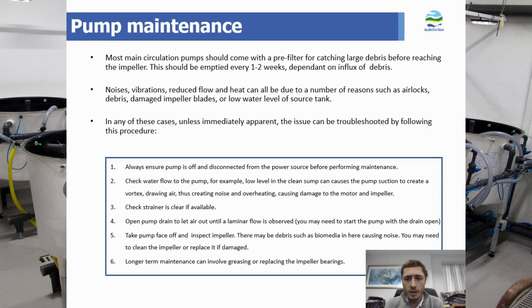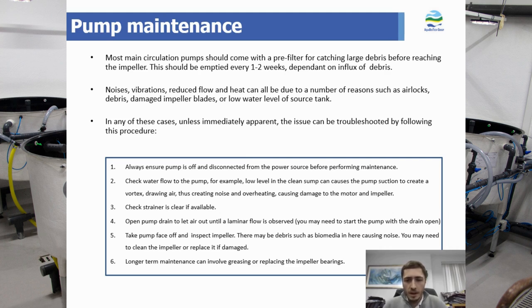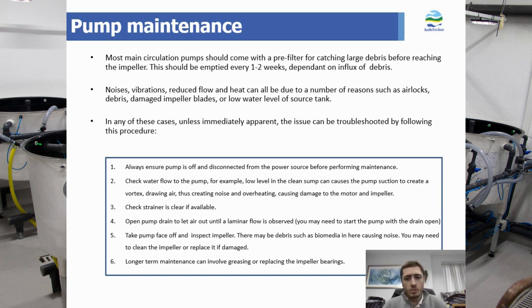As with any electrical component, ensure it's disconnected from the power source before performing any maintenance. Check that the water level I mentioned, and address that elsewhere within the system if that is the problem. Check that the pre-filter or the strainer is clear of any debris. If you're still having issues, some pumps will have a drain point on them to allow for removing any air or filling the pump. Some pumps aren't self-priming and will need to be filled or just to have the air released before they work. So if you have this on your pump, open it up and wait until you see water coming out steadily. If you're still having trouble, you can inspect the impeller by taking off the face of the pump. Longer term maintenance — around two-year maintenance — would be to properly open it up, grease any gears, and maybe replace some of the impeller bearings.